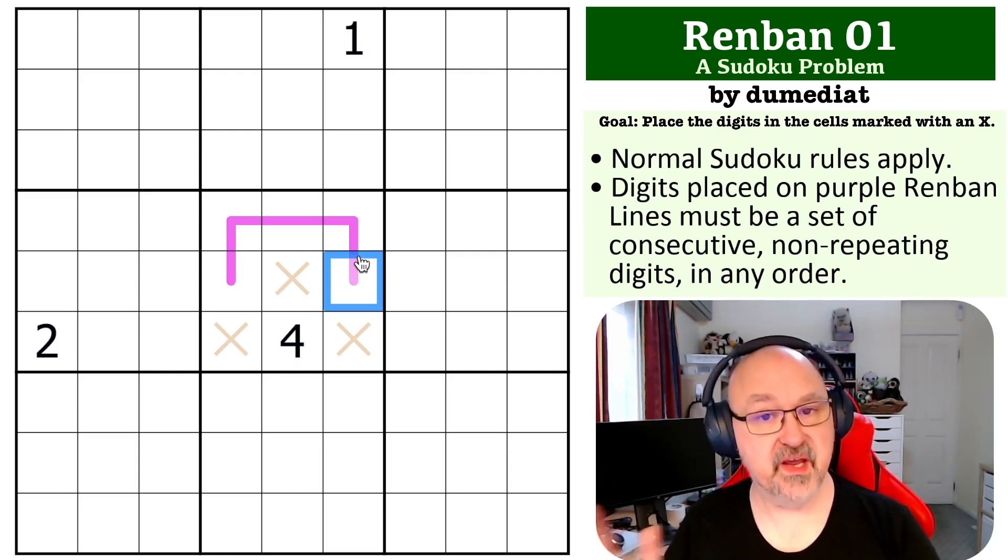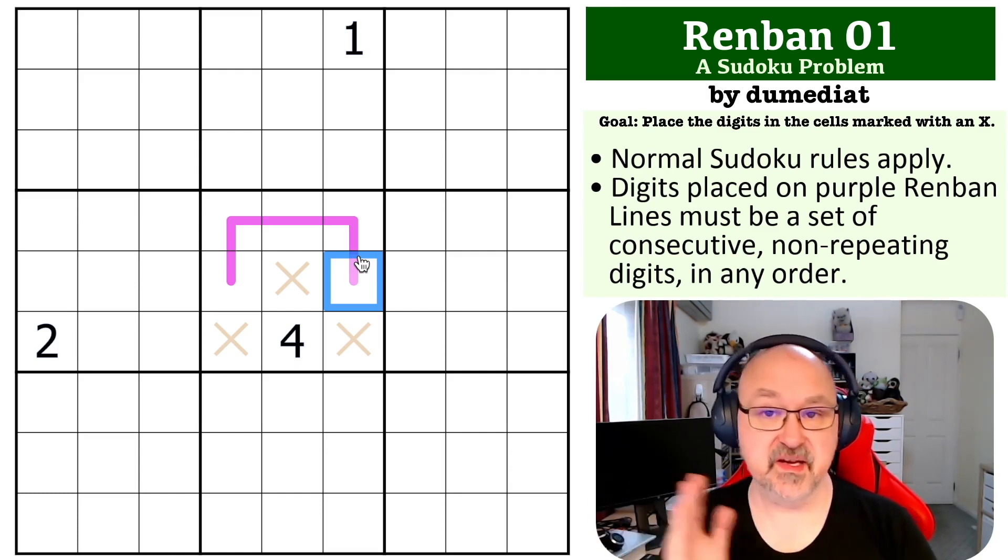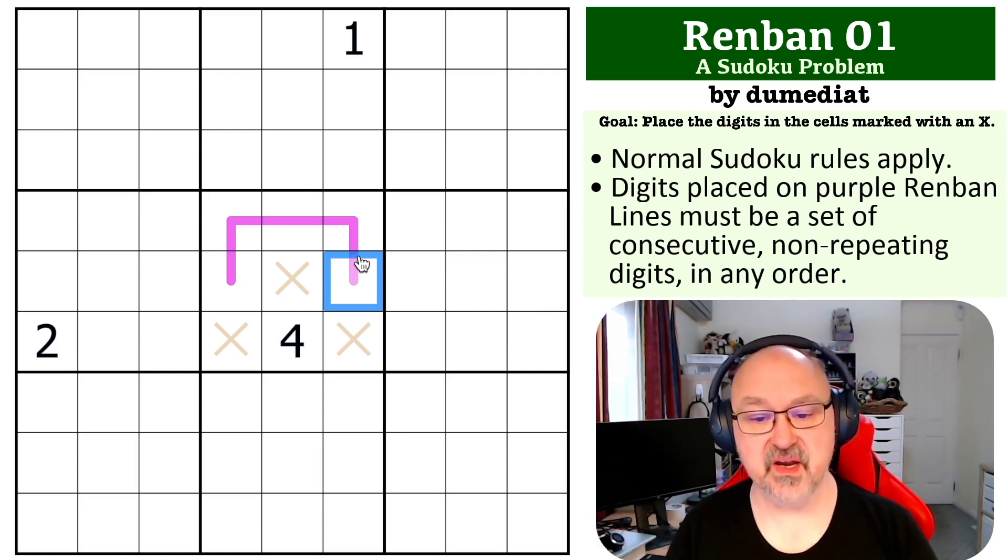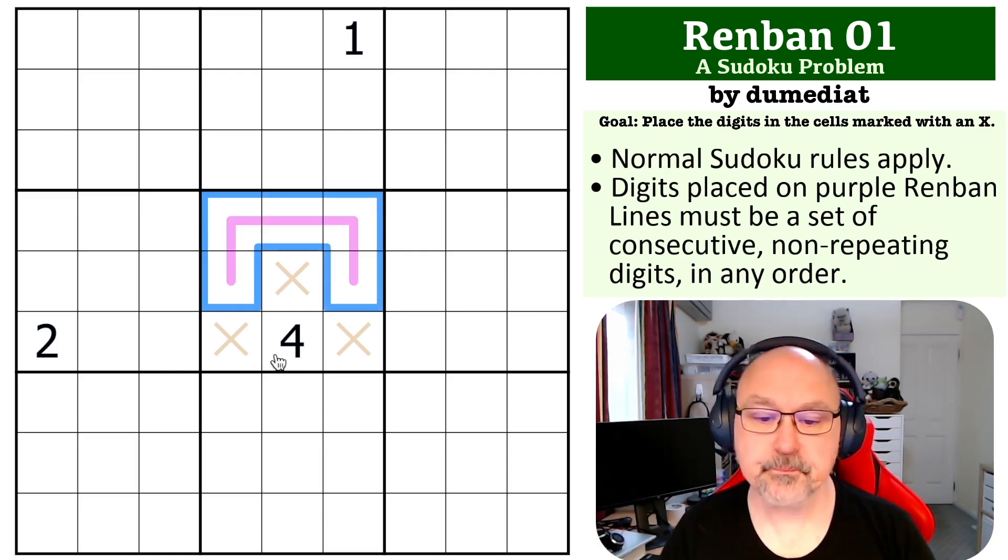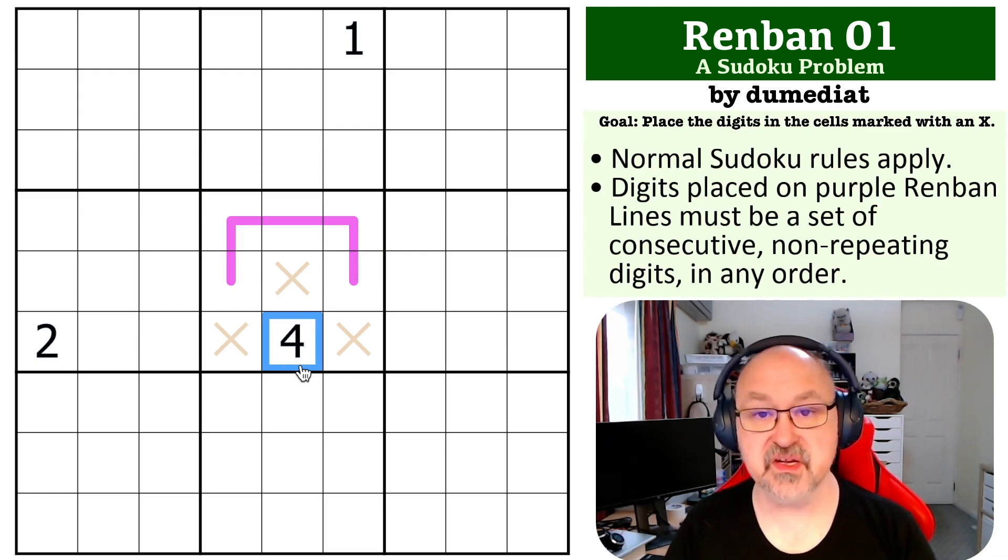So there must be a five on this Renban line. But because of the four in the box, we can't go down, because if we went five, four, we've run out. We can't start anywhere with four or lower. So because it must have a five, it must go five, six, seven, eight, nine.